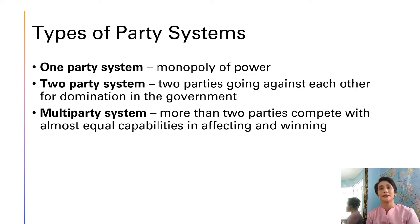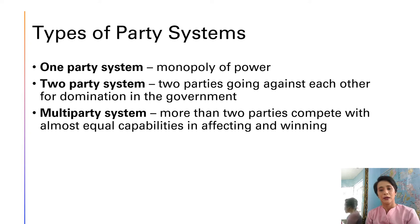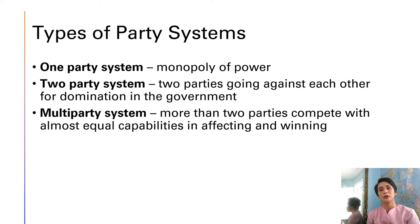The third type of party system is the multi-party system, wherein there are more than two parties that compete and have almost equal capabilities in affecting and winning elections. This is the system the Philippines uses. When we were under American rule, we had two major parties — the Nationalista Party and the Liberal Party — but as the years went on, many more parties sprung up, and every election since 1986, the president has come from a different party.